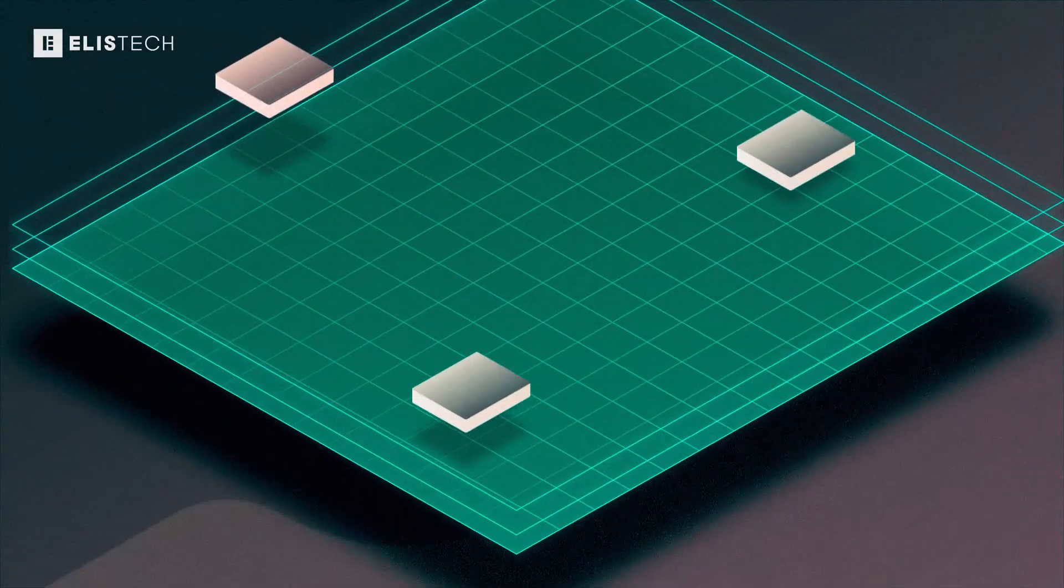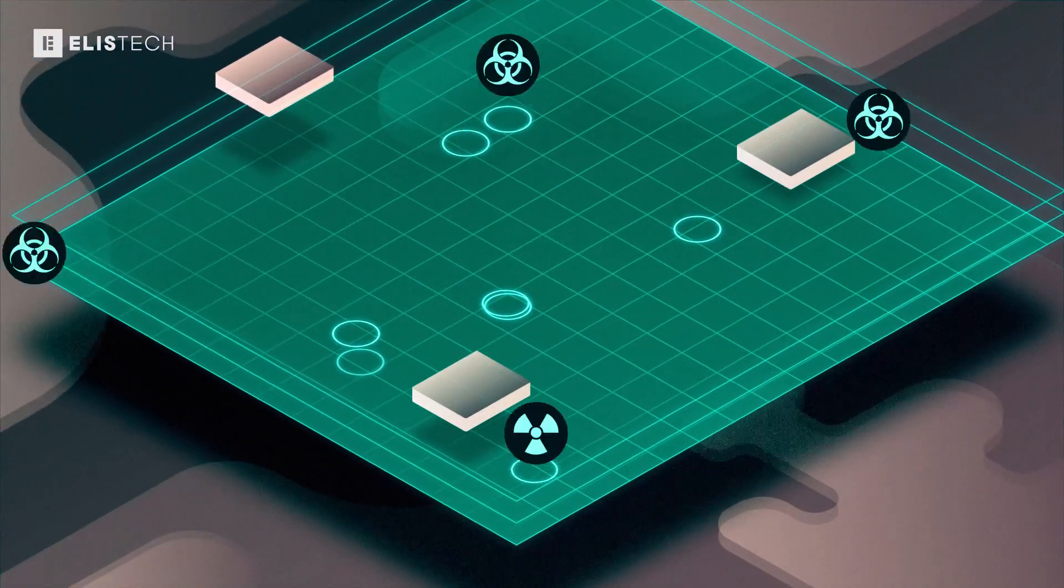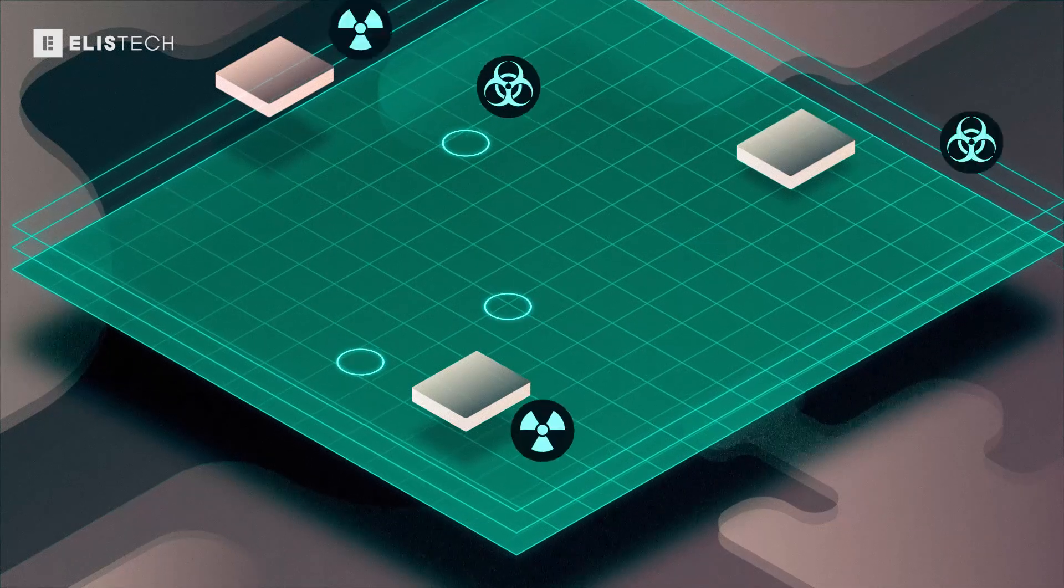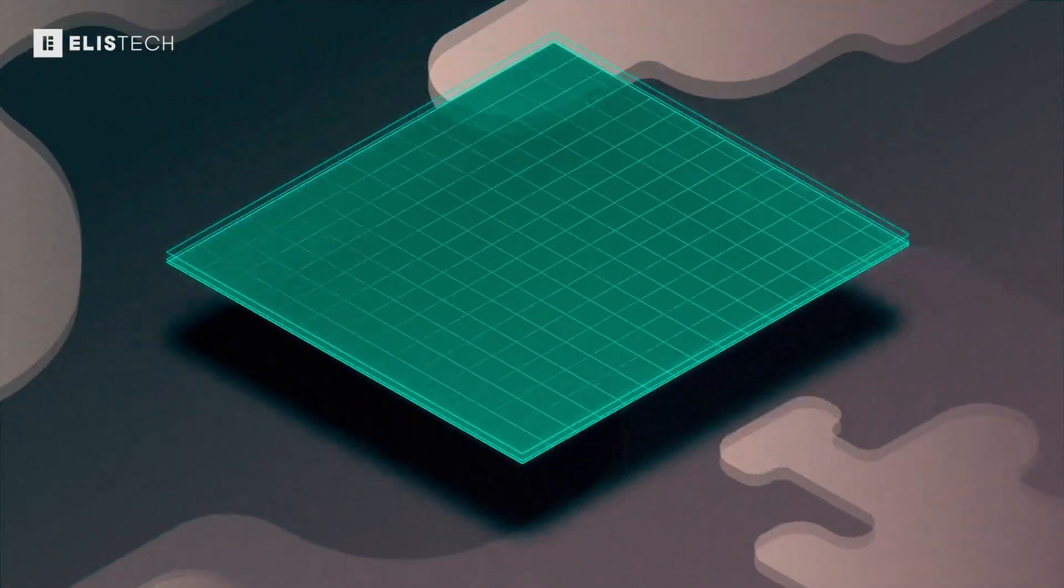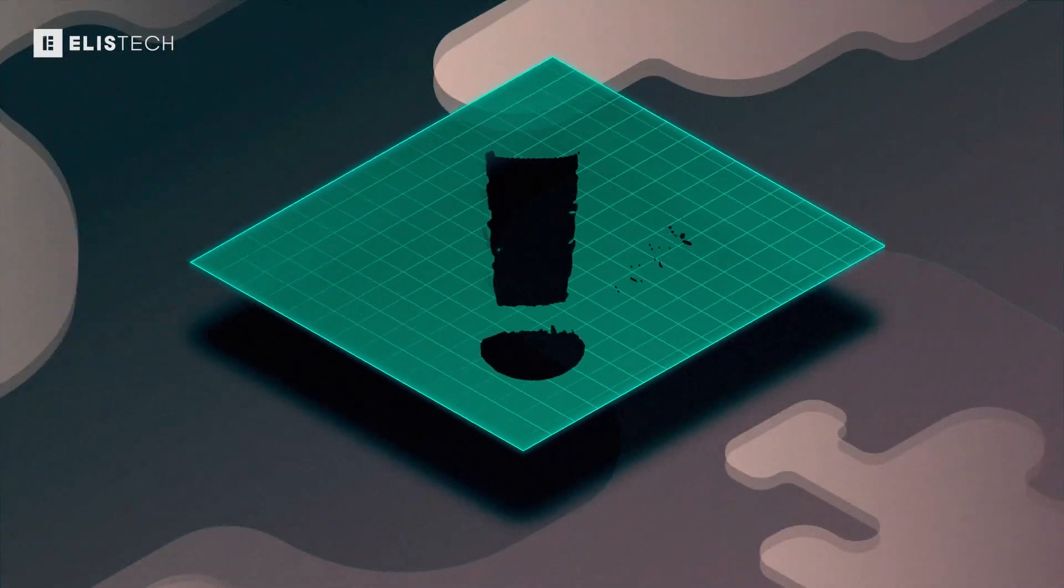Geomembranes are made from materials that effectively prevent penetration of hazardous waste into the environment. However, they are not resistant to mechanical damage.